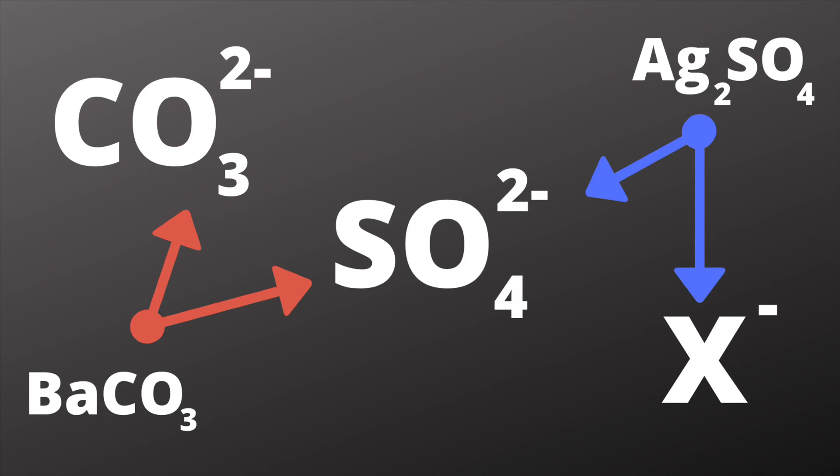Carbonate ions, for example, will actually produce a precipitate with the barium ions that are used in the sulfate test. The precipitate has the formula BaCO3 and it looks just like the BaSO4 precipitate. So I need to know if our solution has carbonate ions in it before I start testing for sulfate ions.